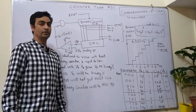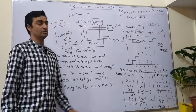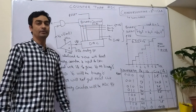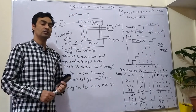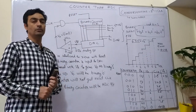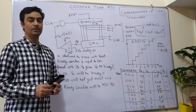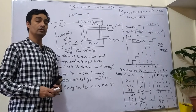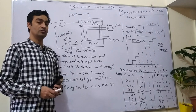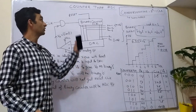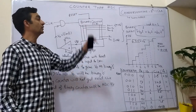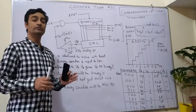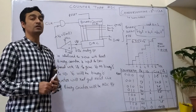Hello, this is the next class which is related to counter type ADC. In the last class we discussed about flash type analog to digital converter, which was the fastest one. Now we are talking about counter type ADC, which is very easy to understand.